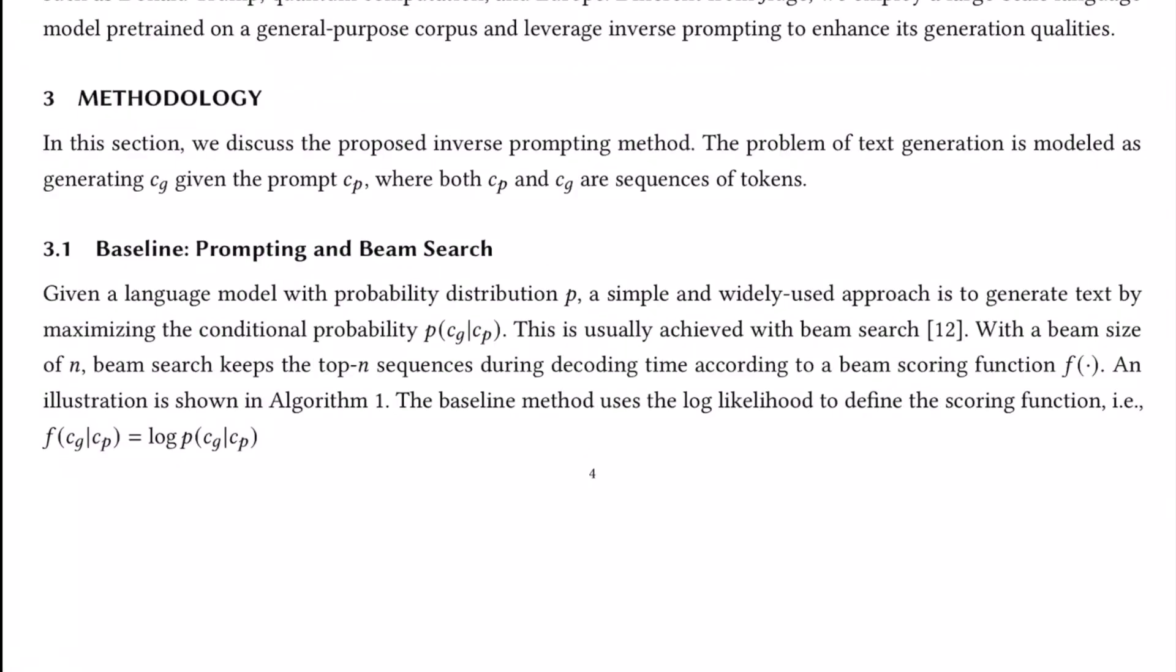The first is the baseline method, in which they use prompting along with beam search for generating text. Both the prompts and the texts you generate are sequences of tokens given by CG and CP respectively. We wish to maximize the conditional probability of P of CG given CP. Once autoregressive training of search models is done, during inference time, we apply beam search to maximize the likelihood of the sequence. This requires you to define two parameters: n, which is the beam size, and the number of time steps t that define the sequence length.